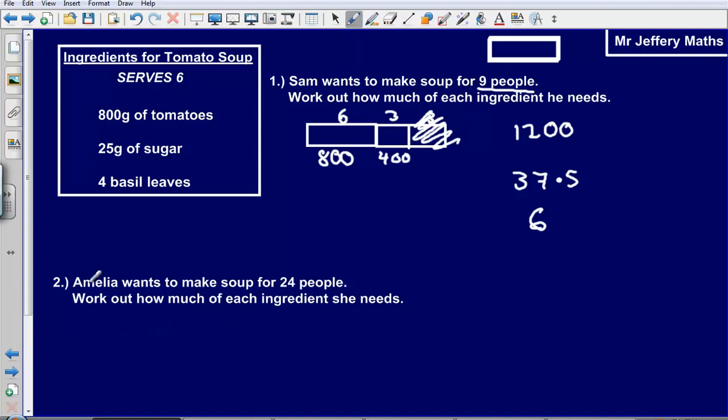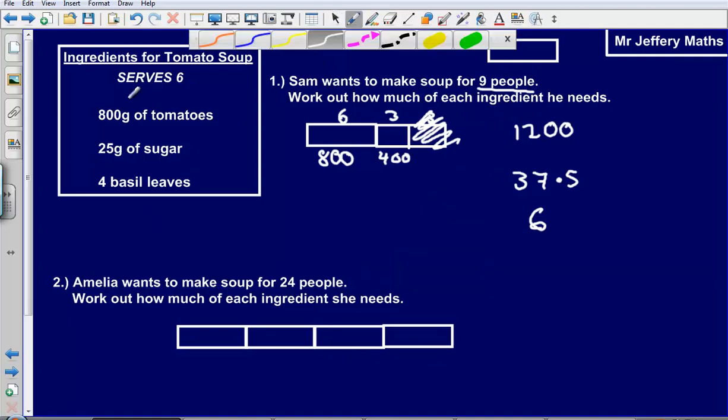Second one, Amelia wants to make soup for 24 people. Again, same idea that we used before. We can see that we would need our bar if we need it. And this time, again, same idea. This would make it for 6, and that is going to give us, dealing with the tomatoes first, 800 grams.